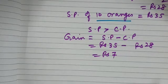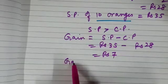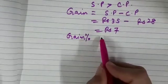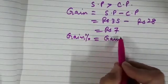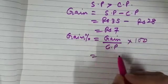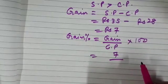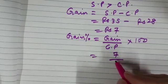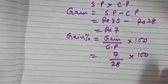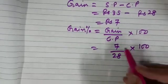Now we need to calculate the gain percent, and we know that gain percent is calculated on the cost price. Gain percent is gain upon CP times 100. How much is gain? 7. And CP is 28, so 7 upon 28 times 100. Let us simplify this.